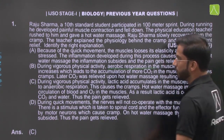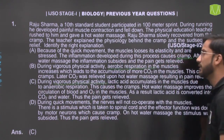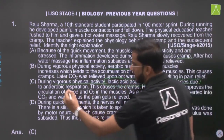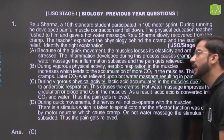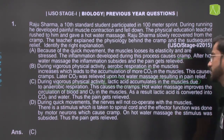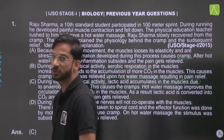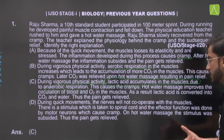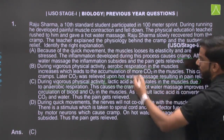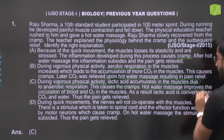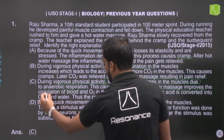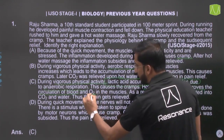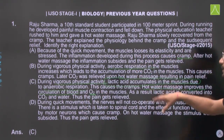Option C: During vigorous physical exercise, lactic acid accumulates in the muscles due to anaerobic respiration. This lactic acid deposition causes the cramps — a painful condition. Then, the hot water massage improves blood circulation, increasing oxygen supply to the muscles.